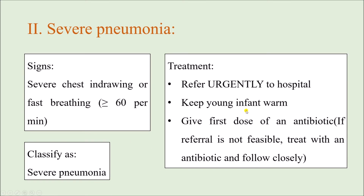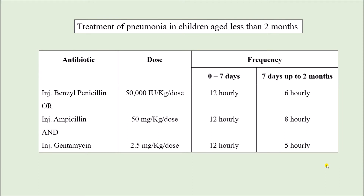The treatment for Severe Pneumonia is urgent referral to the hospital, keeping the child warm to avoid hypothermia, and giving the first dose of antibiotic. If referral is not feasible, treat with an antibiotic and follow closely. One important point: for young infants, fast breathing is considered when the respiratory rate is 60 or above. In our previous video we discussed fast breathing thresholds at different age groups — for age less than 2 months it is 60 or above.